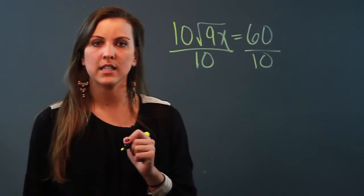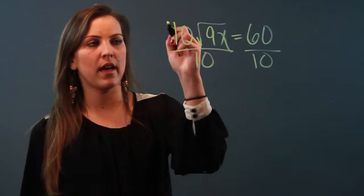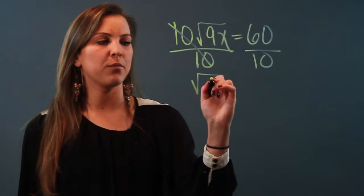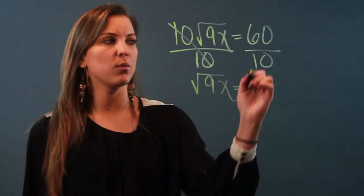So I'm going to divide both sides of my equation by 10 and when I do that these cancel out and I'm left with the square root of 9x equals 6.